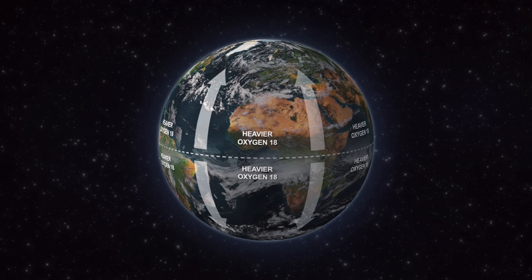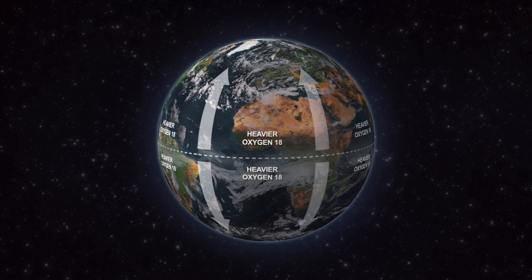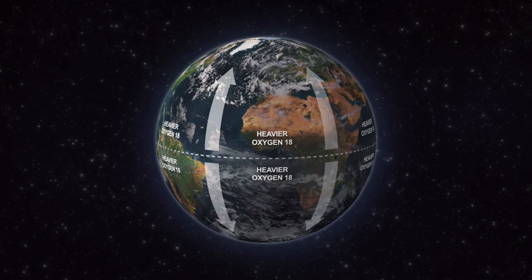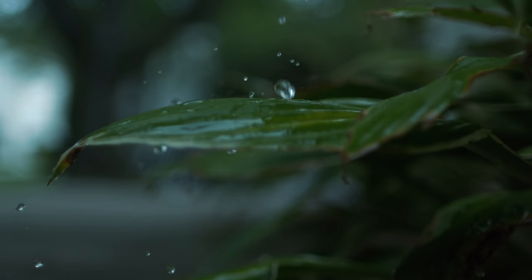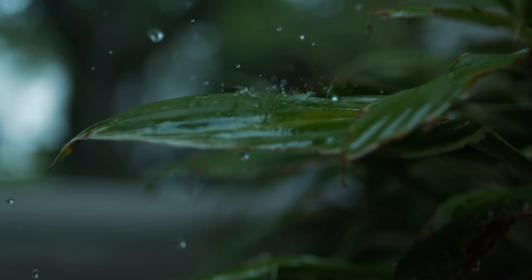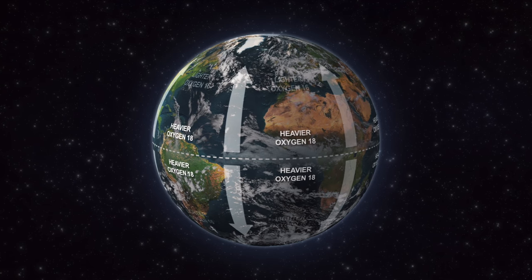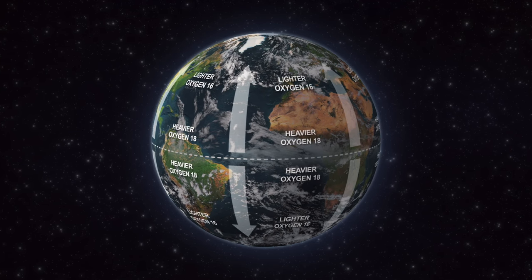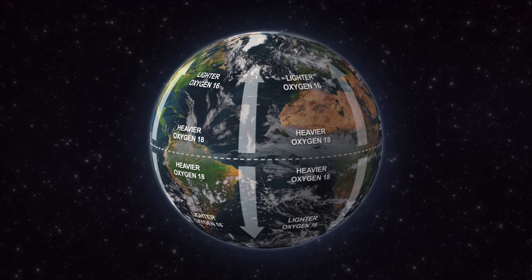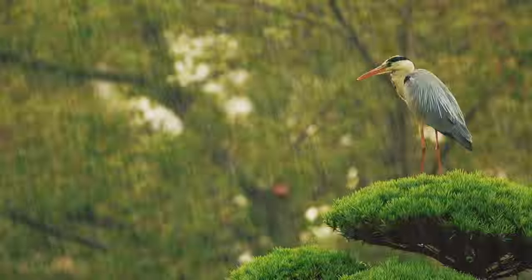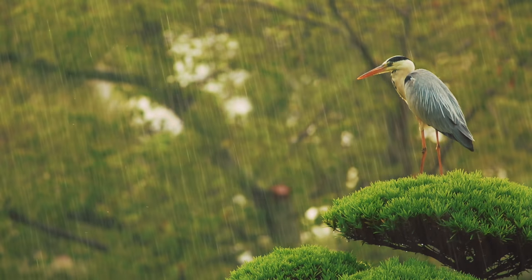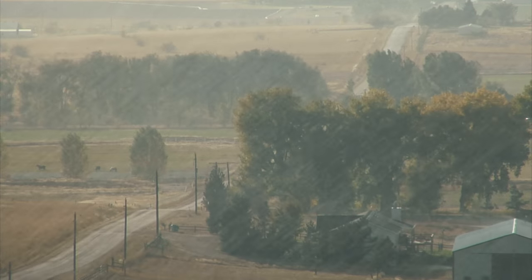This means that the closer you are to the equator, the more of the heavy oxygen-18 there is in the rainfall in that location. The closer you are to the poles, the more of the lighter oxygen-16 you have in your rainfall. This means that each location from the equator to the poles has a unique balance of oxygen isotopes in its rainfall, and this will change with the amount of rainfall globally on our planet.